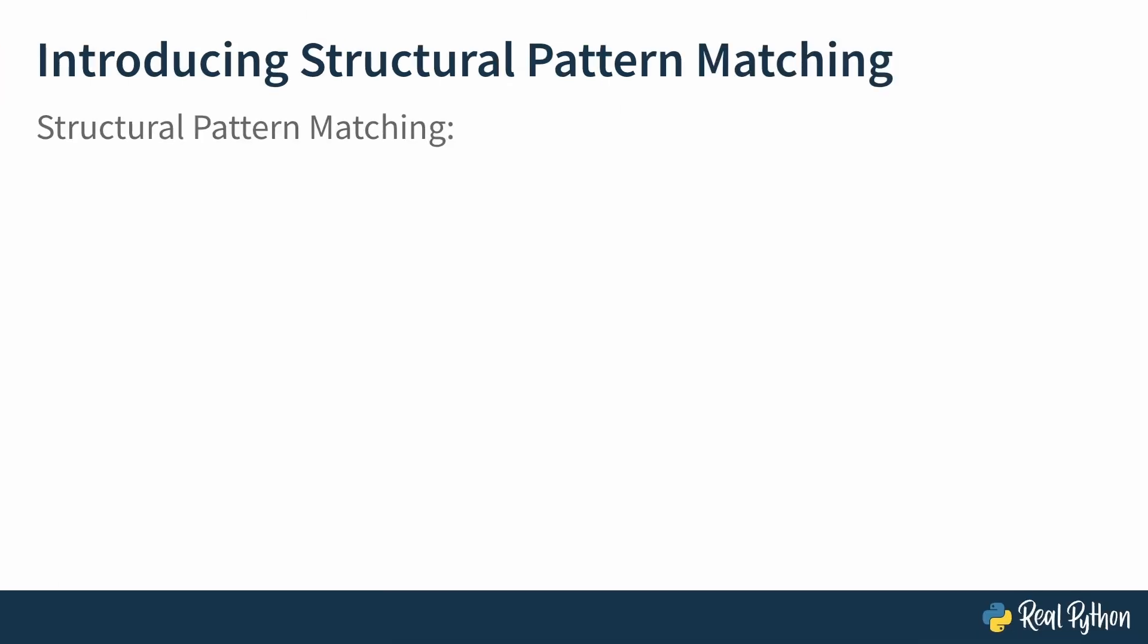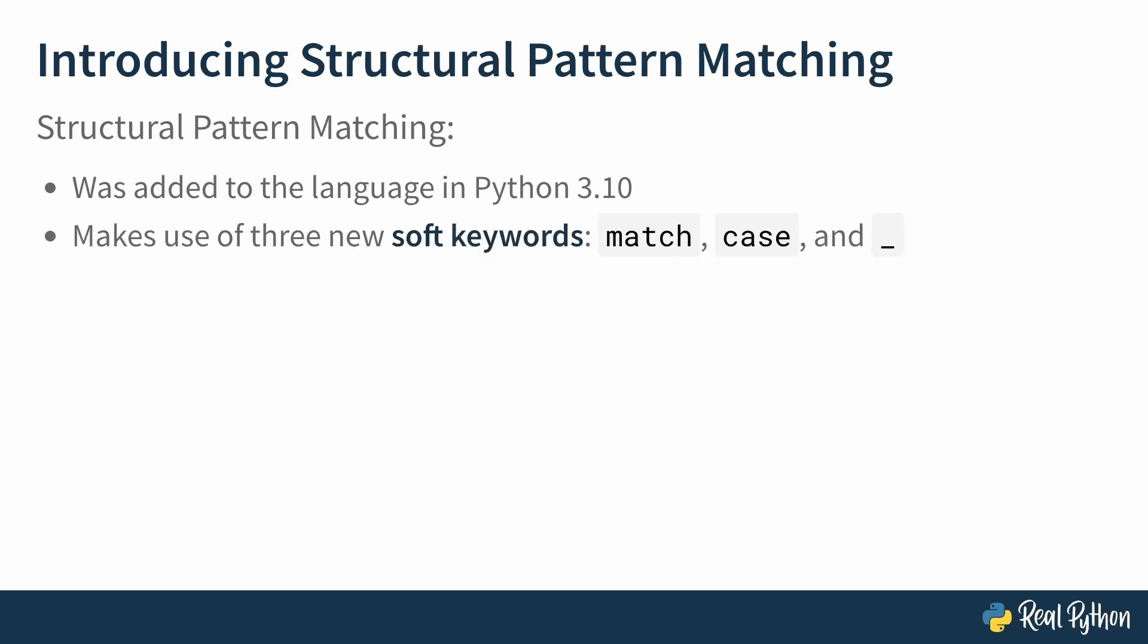Before we get to the exciting action of using structural pattern matching, you'll want to familiarize yourself with its terminology and syntax. Structural pattern matching was added to the language in Python 3.10. It makes use of three new soft keywords: match, case, and underscore, which is used as a wildcard. Now, soft keyword is kind of a new concept. They're a little bit different from other Python keywords because they're contextual. Outside of their keyword context, they're considered valid variable names. But to minimize confusion, I do recommend treating them like any other keyword.